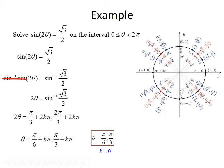Now we'll start generating solutions, beginning with k equals 0. When k equals 0, we get π/6 and π/3, both in our interval from 0 to 2π. When k equals 1, we get 7π/6 and 4π/3, which are also both less than 2π. When k equals 2, we get 13π/6 and 7π/3, and both of those are greater than 2π, so they don't fall in our interval. We can stop here.